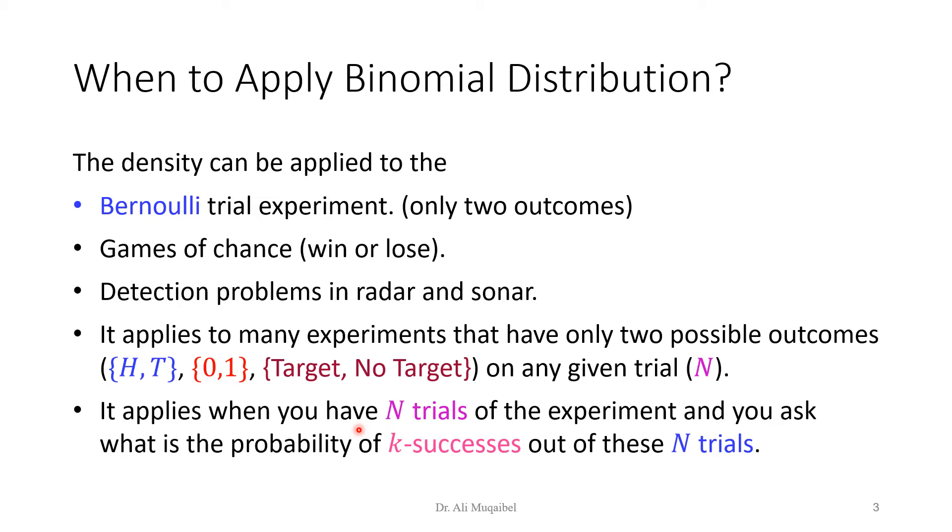It applies when you have n trials of the experiment, and you ask, what is the probability of k successes out of these n trials? If you want to consider all cases, then you have a distribution, which is called the binomial distribution. So the words look the same, and in fact, they are related. This is Bernoulli, the name of the scientist, and you have the binomial distribution, and they are related.